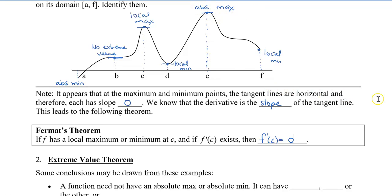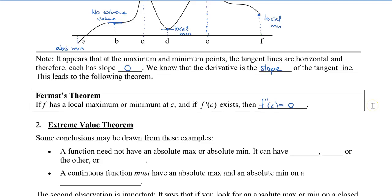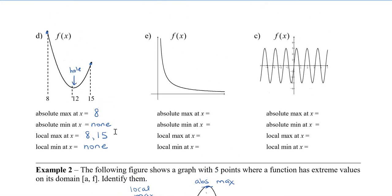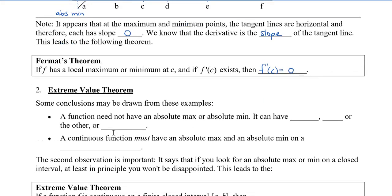This leads us to the extreme value theorem. We can see some conclusions from these examples. A function need not have an absolute max or an absolute min — for example, if there's a hole in the graph, there may be no absolute min. We can have both an absolute max and min, just one of them, or neither. However, a continuous function must have an absolute max and an absolute minimum on a closed interval. If we have endpoints on our interval and it doesn't go on forever, then we will have an absolute max or min.